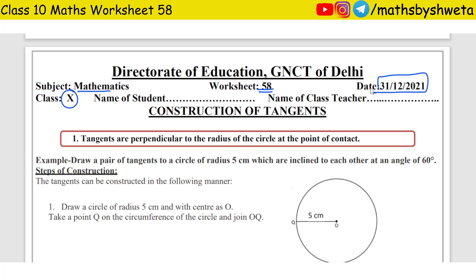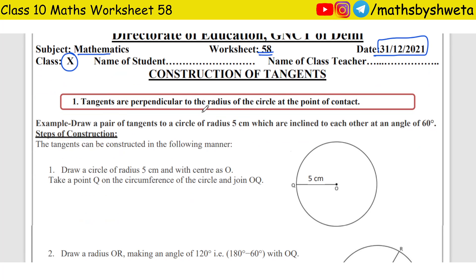Here you have written the first number. Tangents are perpendicular to the radius of the circle at a point of contact — so this will be our theorem, Theorem 10.1, in which the radius was perpendicular to the tangent and made a 90-degree angle. Today we are going to use this theorem as we complete our worksheet.